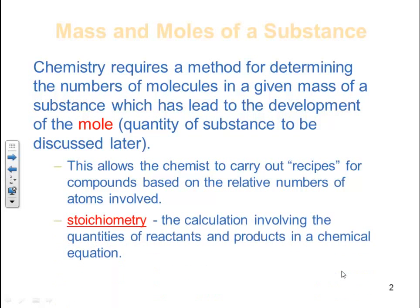What we're talking about is the term stoichiometry. Stoichiometry is the calculation involving the quantities of reactants and products in a chemical equation. This is the main topic of this chapter — we're basically taking dimensional analysis to a different level.